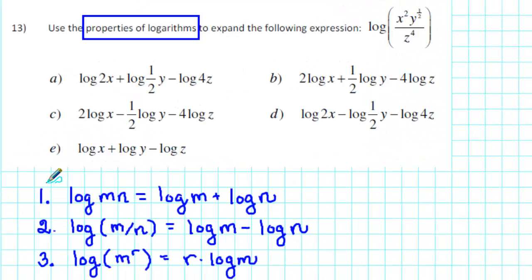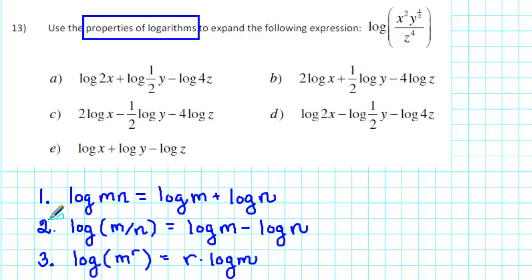The first property of logarithms says that the logarithm of a product is equal to the sum of two logarithms — the logarithm of the first factor plus the logarithm of the second factor. The second property says that the logarithm of a quotient is equal to the difference of two logarithms — the logarithm of the numerator minus the logarithm of the denominator.